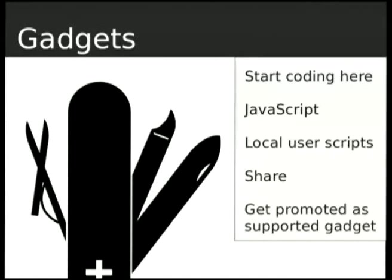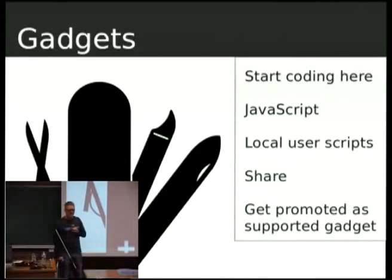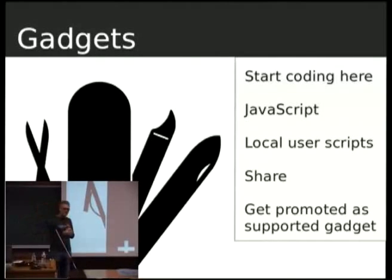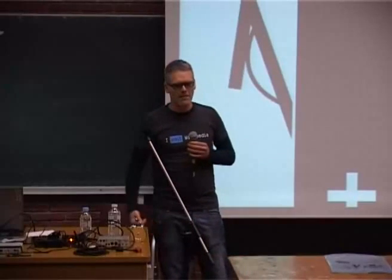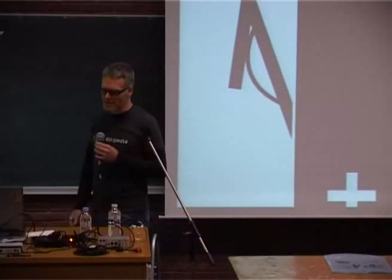Now let's go to code development. There are different opportunities for software developers. I will start with what we call gadgets, because it's probably the easiest entry point. We're talking about JavaScript, and you can start with something as easy — and actually with a clear impact — as a user script. A user script that you can run locally, in your own wiki. You just need a user account, and then you can customize the Wikipedia user interface: change the navigation at the left, change something at the bottom, put categories from the bottom to the top. You can do a lot of functionality with your own user scripts.